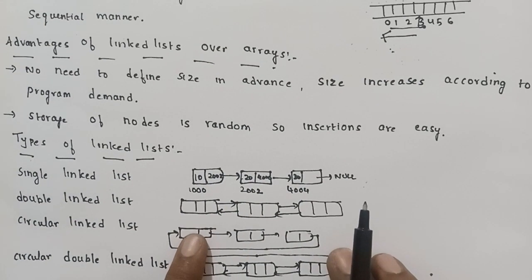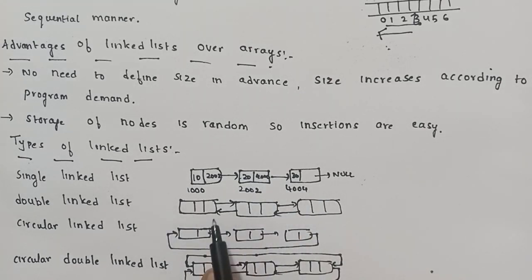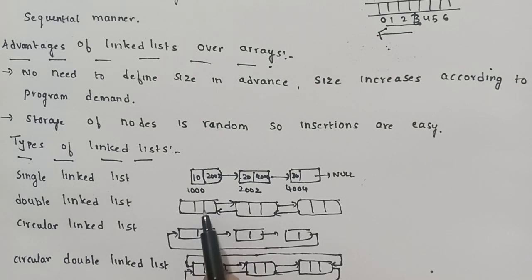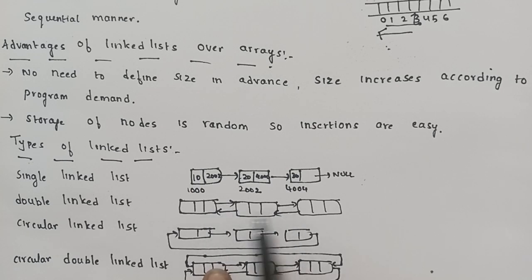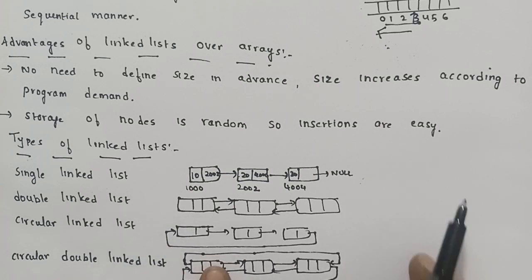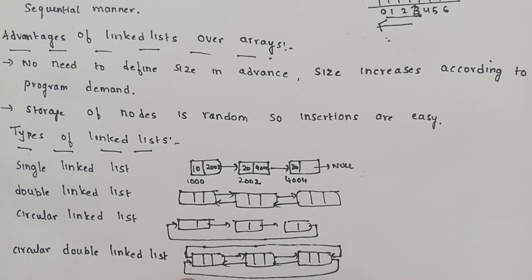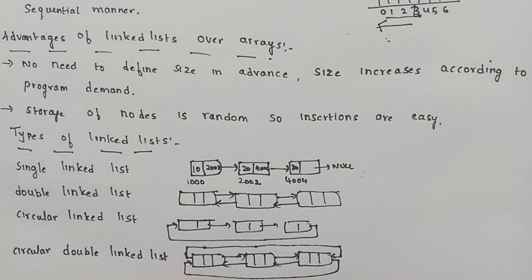In single linked list, there is only one pointer per node which points to the next node on the right side. Next, double linked list has two pointers per node — one forward and one backward — allowing traversal in both directions. Next, circular linked list: the last element is connected back to the first element, making it circular. Finally, circular double linked list: same as double linked list but the last element is also connected back to the first element.